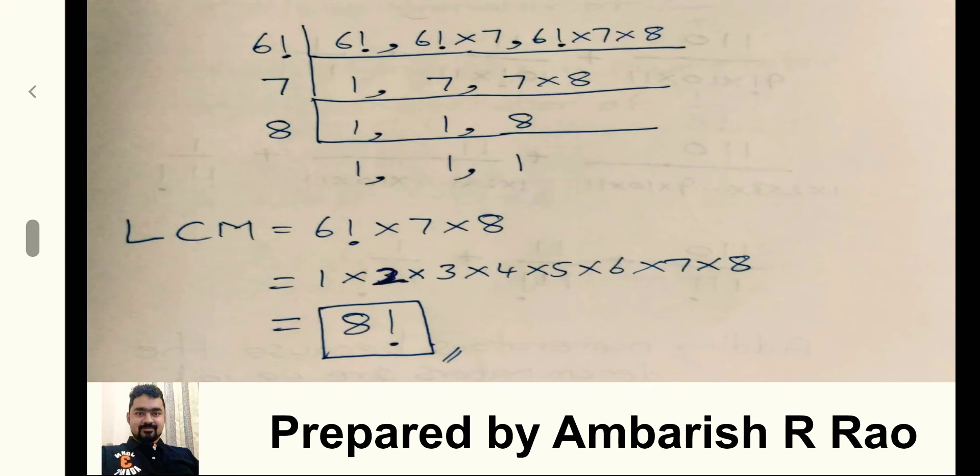The traditional big L method of finding LCM. Now let us multiply the factors, that is 6 factorial into 7 into 8. As we already know, 6 factorial is 1 into 2 into 3 into 4 into 5 into 6, and when we multiply 7 into 8 we get 8 factorial.